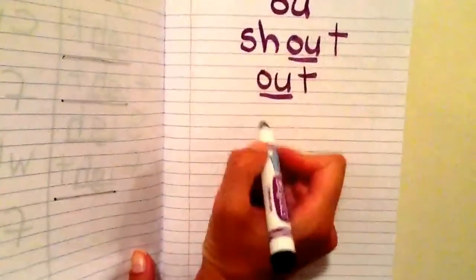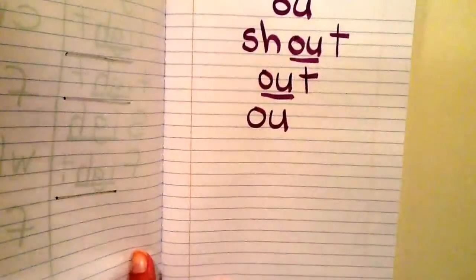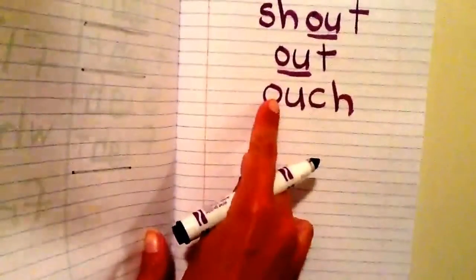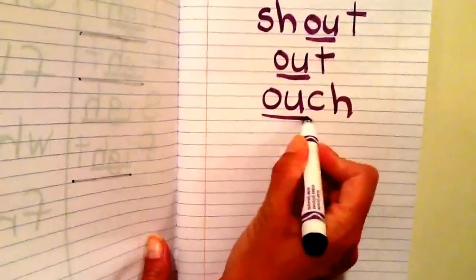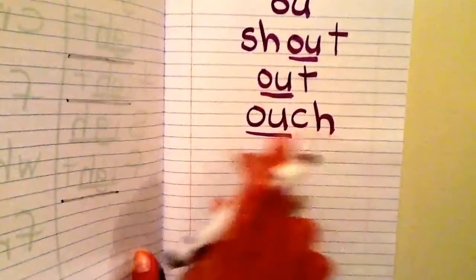Another word that has OU in it saying OW is the word OUCH. I say that slowly and I hear OW first, so I'm going to put OU. And then I hear CH — OUCH — our CH friend, Chelsea Cheetah. And then I'm going to underline OU.